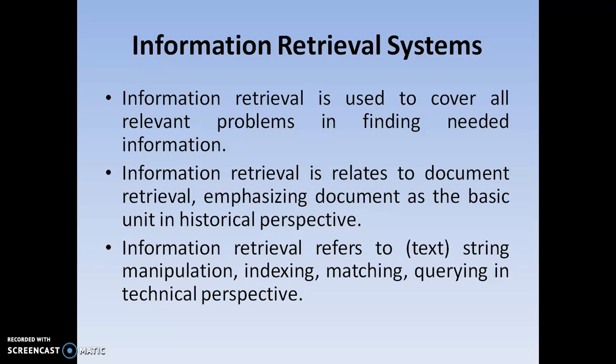What is relevant to Information Retrieval Systems? It is used to cover the relevant problems of finding the needed information. It is mainly used to focus on document retrieval. Other kinds of examples include string manipulation, indexing, matching, and clearing in the technical perspective. The main motivation of Information Retrieval Systems is to address the problems associated with finding and extracting information. Normally, it retrieves document information, because within the document the entire information is stored.